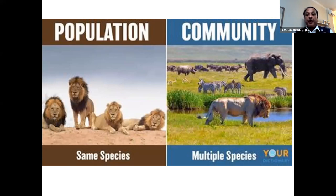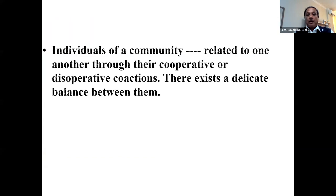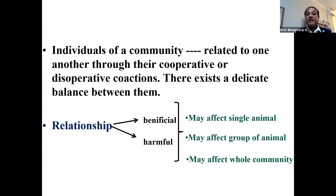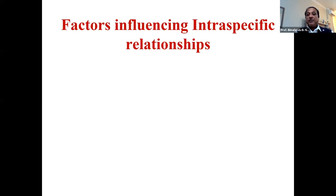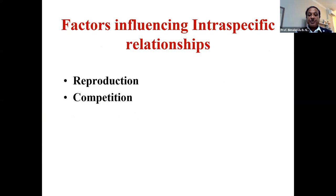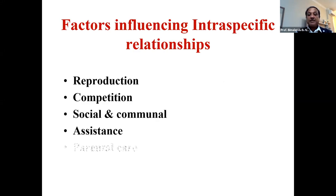These two lectures — part one and part two — are focused on relationships within or among individual organisms belonging to the same species. Individuals of a community are related through cooperative or disoperative coactions. There exists a delicate balance between them, and the relationship can be beneficial or harmful, affecting a single individual, a group, or the whole community. The factors that influence intraspecific relationship are reproduction, competition, social and communal assistance, and parental care.